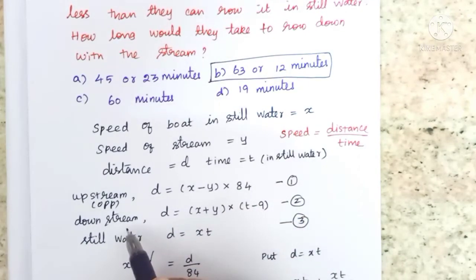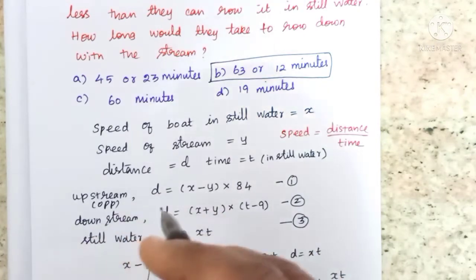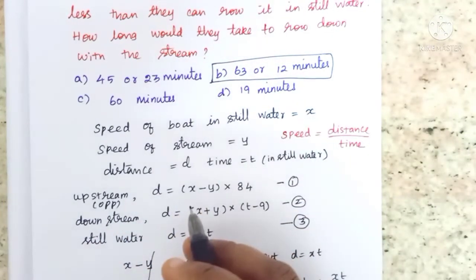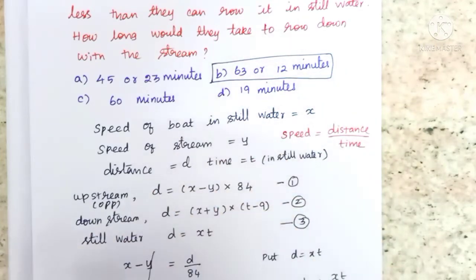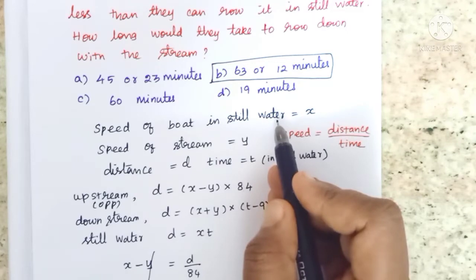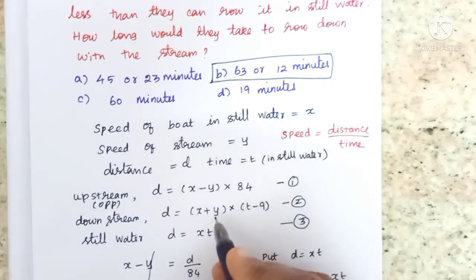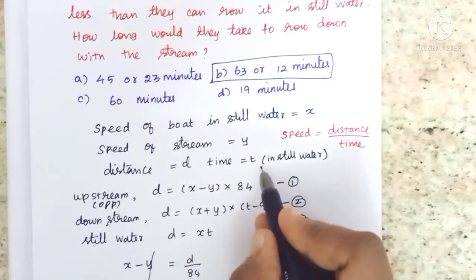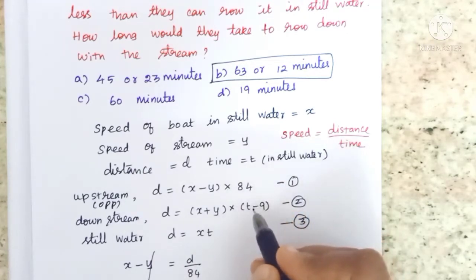Next is downstream. Going downstream, we add the speeds, so x plus y times the time.